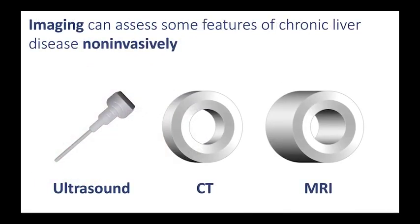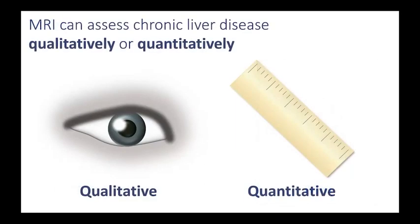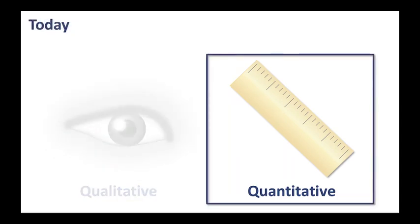Imaging is showing great promise in its ability to assess some of the features of chronic liver disease non-invasively, and all three of the major modalities — ultrasound, CT, and MRI — show promise for this purpose. In today's lecture, we'll be focusing on MRI. MRI can assess chronic liver disease either qualitatively or quantitatively, and today's lecture will be focusing on the quantitative assessment of chronic liver disease.